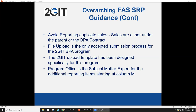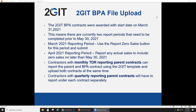The program office are the subject matter experts for reporting items beyond column L. Columns A through L are your traditional TDR — transactional data reporting — columns; these are standard requirements under the TDR program. FAS SRP at gsa.gov can assist with questions on columns A through L. Once you get to column M and beyond, those are program office requirements.